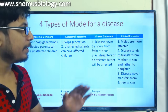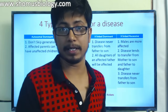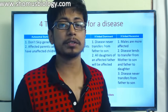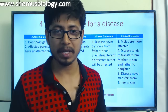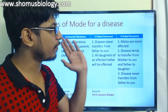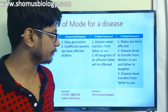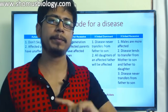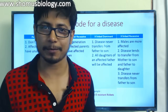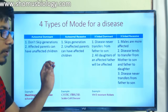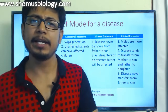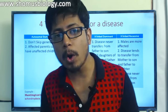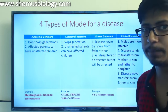In X-linked recessive, males are more affected compared to females because males have only one X chromosome, which is transferred from the mother since the father only gives a son the Y chromosome. This disease also transfers from father to daughter and mother to son, and the disease never transfers from father to son - it's not possible because the father only provides Y to the son in X-linked inheritance. These are all the important clues and features to find in pedigree problems.